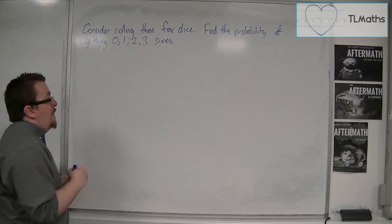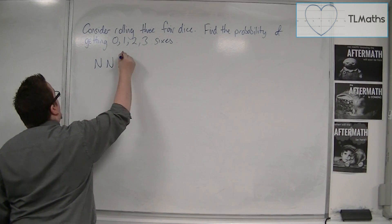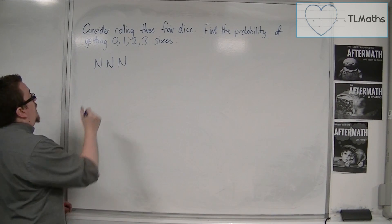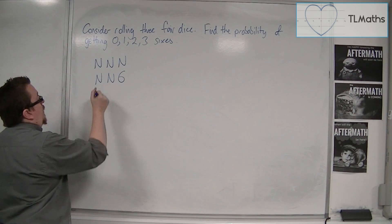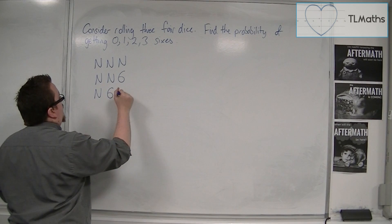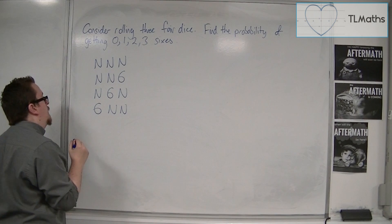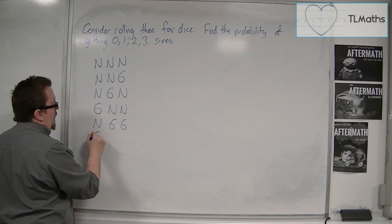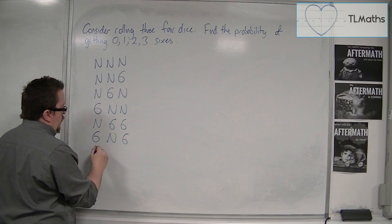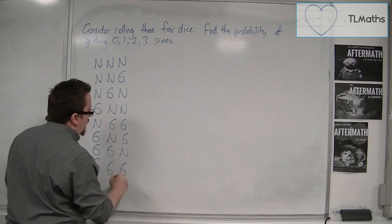The first thing that could happen is I get three numbers that aren't 6s: n, n, n. Or I could get n, n, 6. Or n, 6, n. Or 6, n, n. Or n and two 6s: n, 6, 6. Or 6, n, 6. Or 6, 6, n. Or finally, 6, 6, 6.